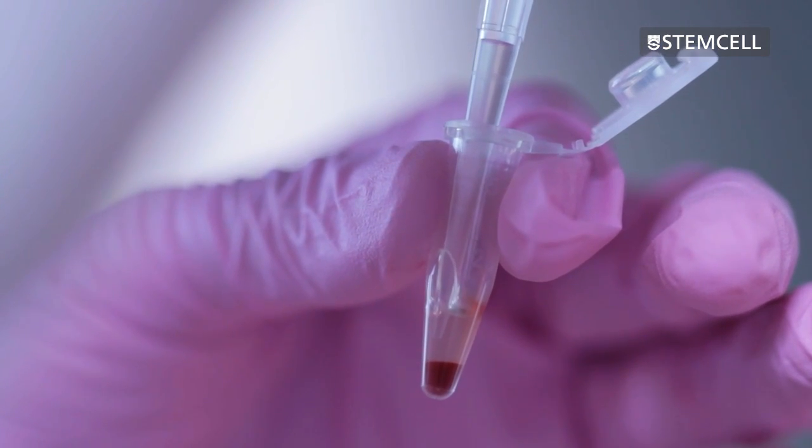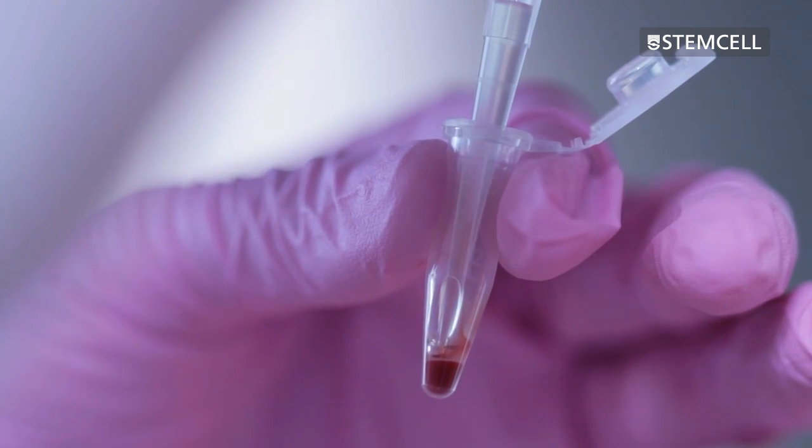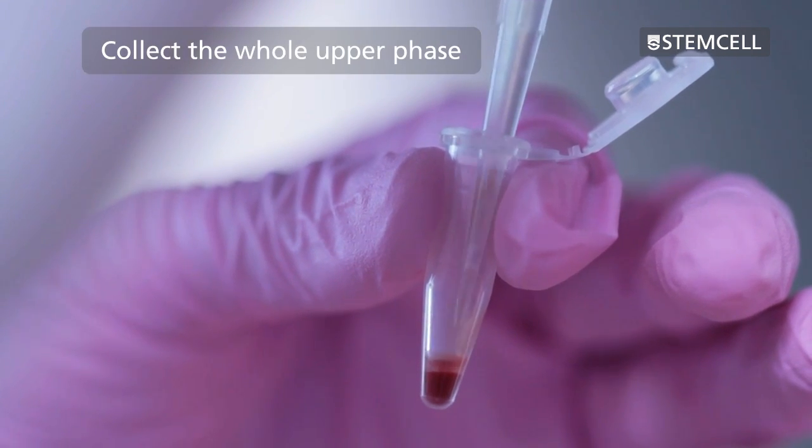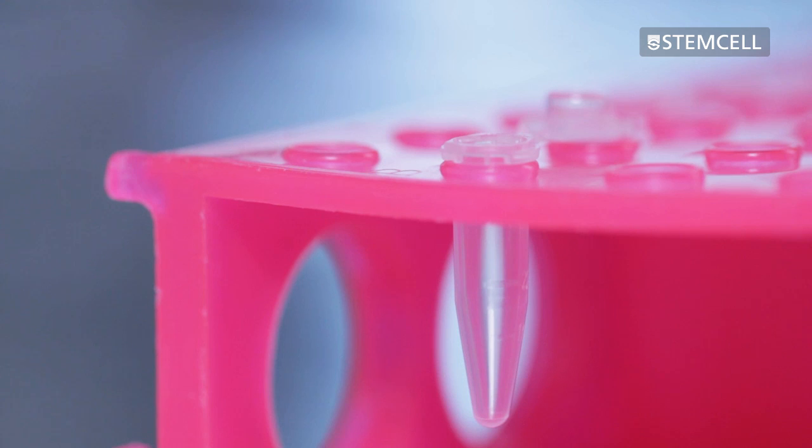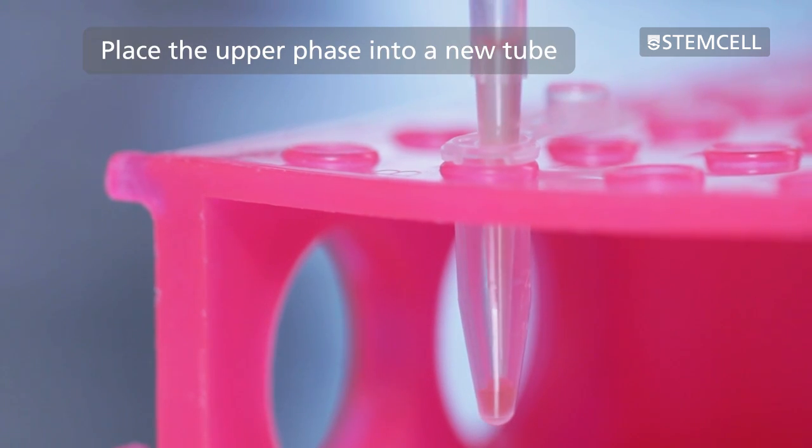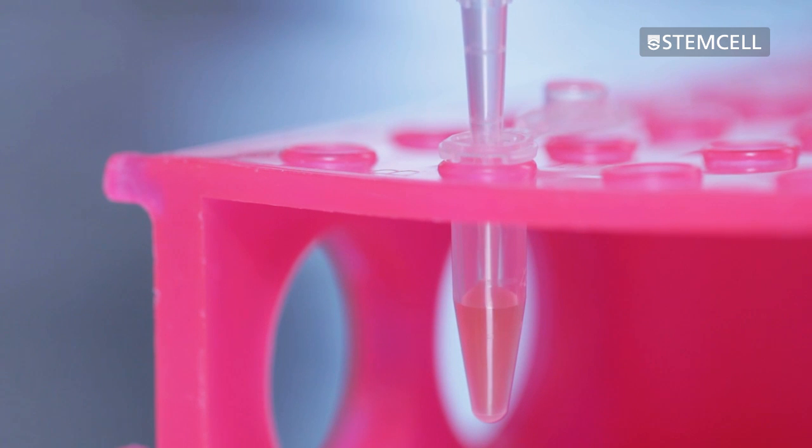To aspirate the upper phase, slowly move the tip downward toward the RBC pellet to collect the whole upper phase. Place the upper phase into a new tube. This is your RBC-depleted sample containing only the nucleated cells.